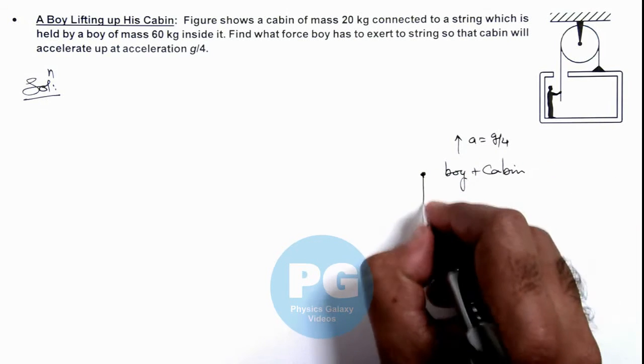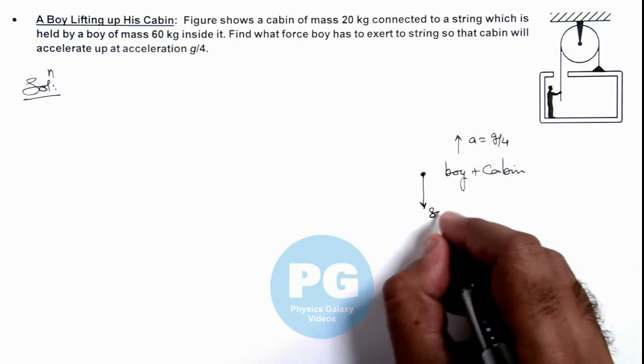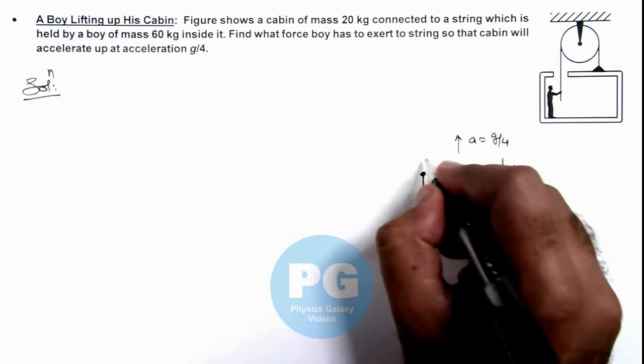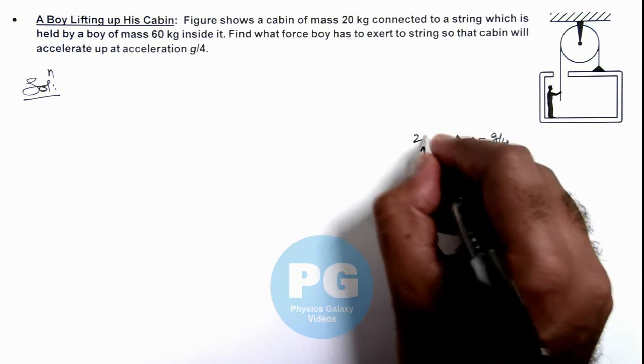So in downward direction it will experience the weight which is 20 plus 60 kg, that is 80 g. And in upward direction the whole system is experiencing the tension 2T.